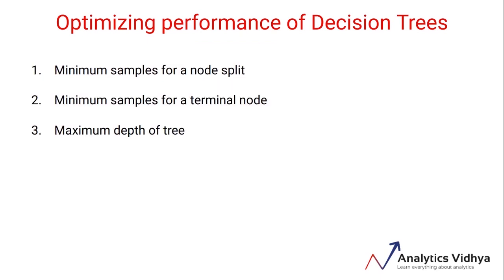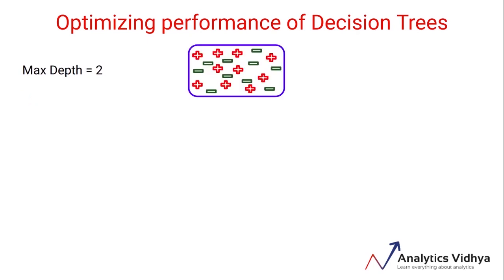Another way is to set the depth of the tree till which it should grow, and once the tree has grown to that defined depth, it will stop the splitting process. Let's again take this example and assume that we have set the maximum depth to 2. In this node, the depth of the tree is 0 as it hasn't yet grown.